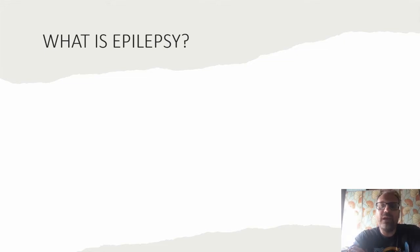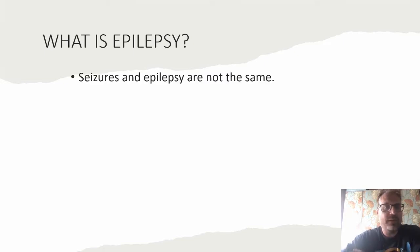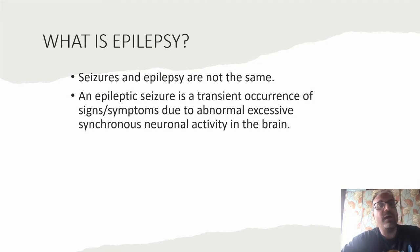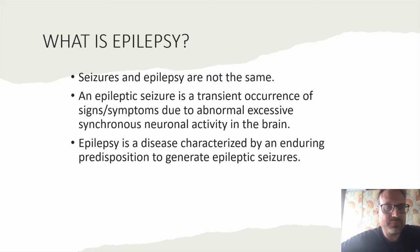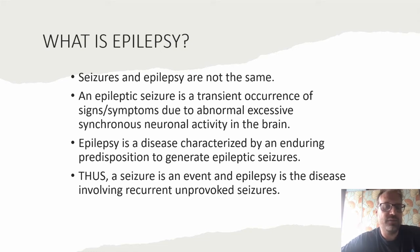So what is epilepsy? We have to define it and define seizures and how they are related, because seizures and epilepsy are not the same. An epileptic seizure is a transient occurrence of signs or symptoms due to abnormal excessive synchronous neuronal activity in the brain. Epilepsy, on the other hand, is a disease characterized by an enduring predisposition to generate epileptic seizures — a seizure is an event, epilepsy is the disease involving recurrent unprovoked seizures.